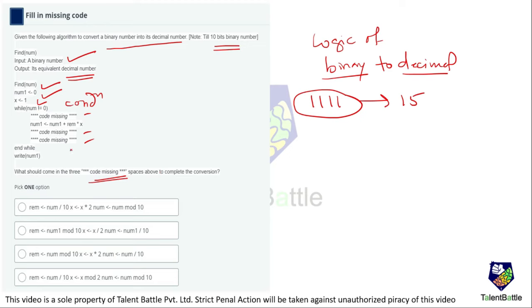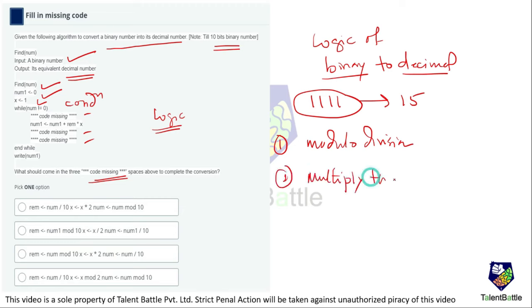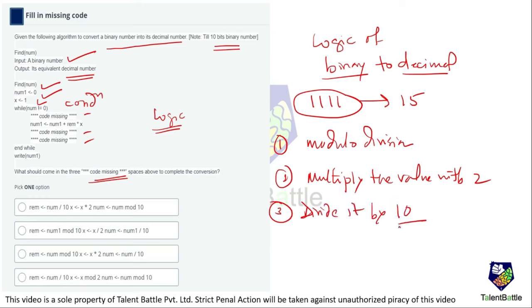We have to pick the correct option to replace the three missing statements. The logic to apply for binary to decimal conversion is: first, take modulo division of the respective value; second, multiply the current value by 2; and third, divide by 10 so it works on the unit places of the digit.